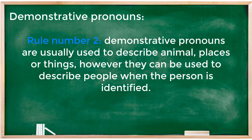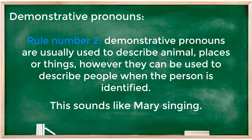The second rule: demonstrative pronouns are usually used to describe animals, places, or things. However, they can be used to describe people when the person is identified. For example: 'This sounds like Mari singing' — maybe you hear some music and you think this sound is Mari's.